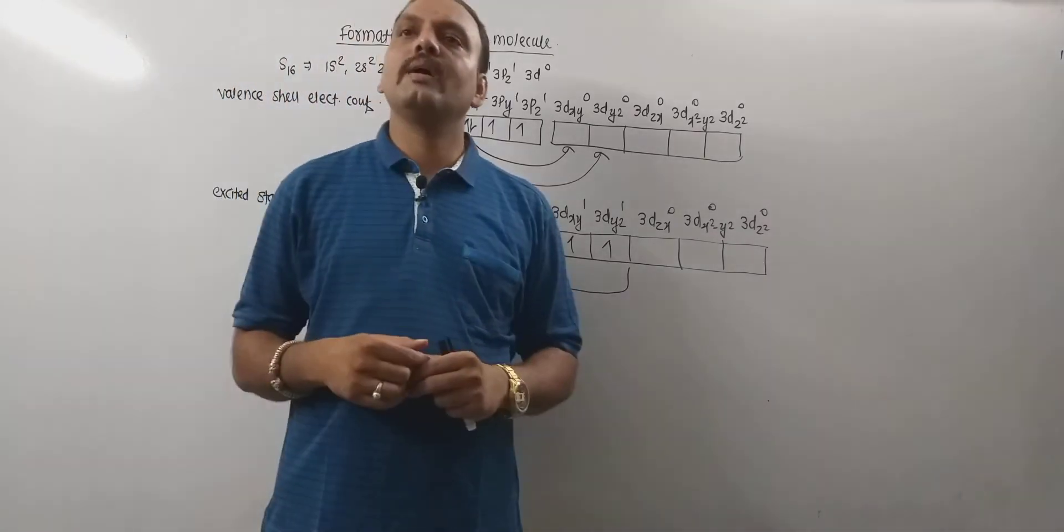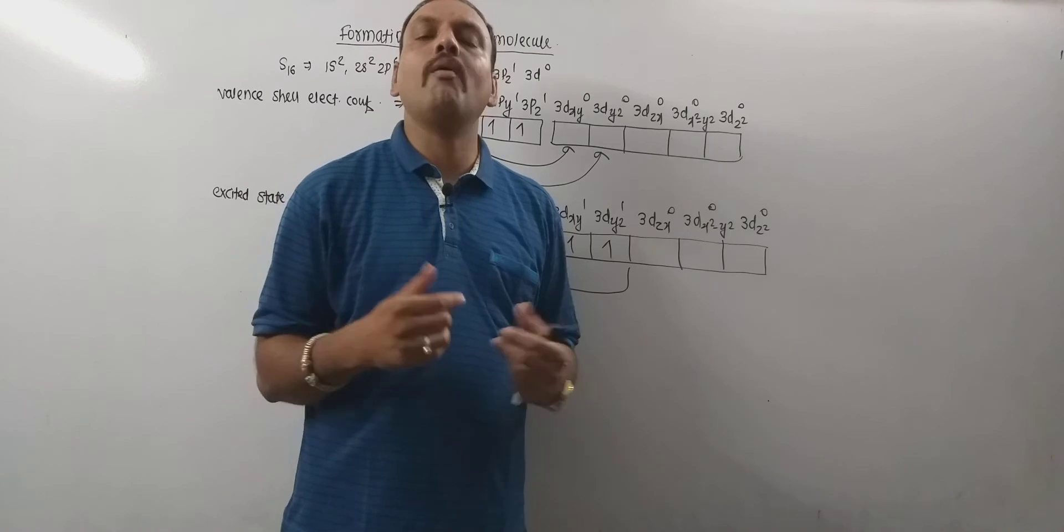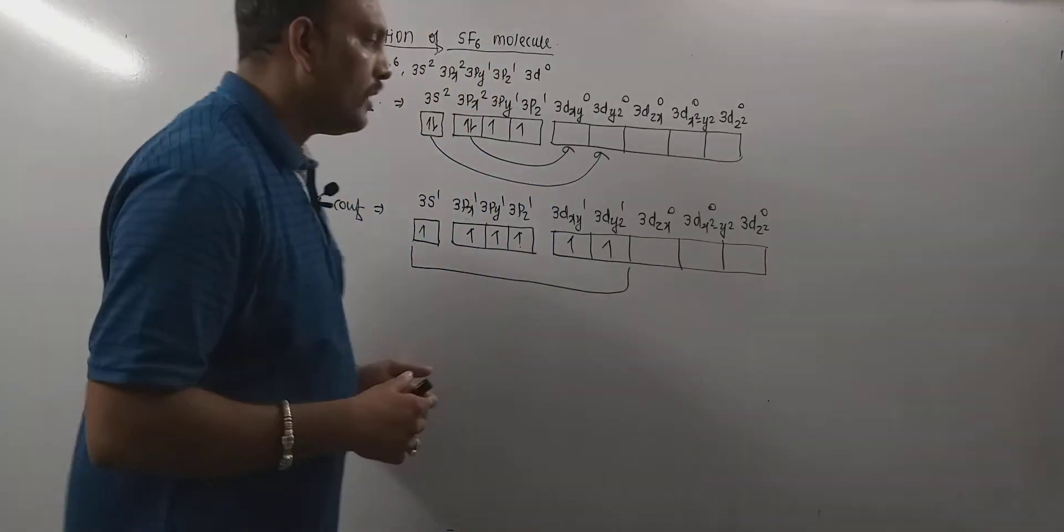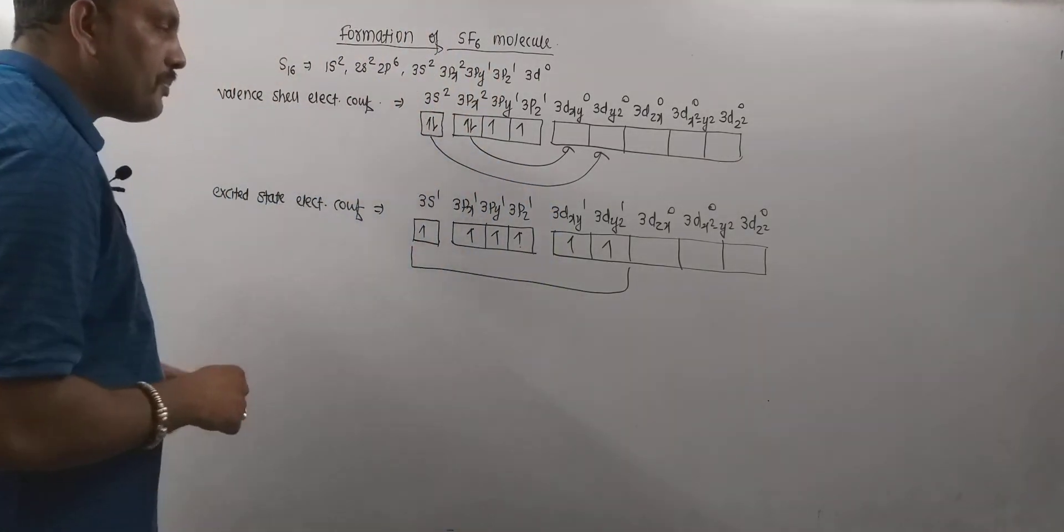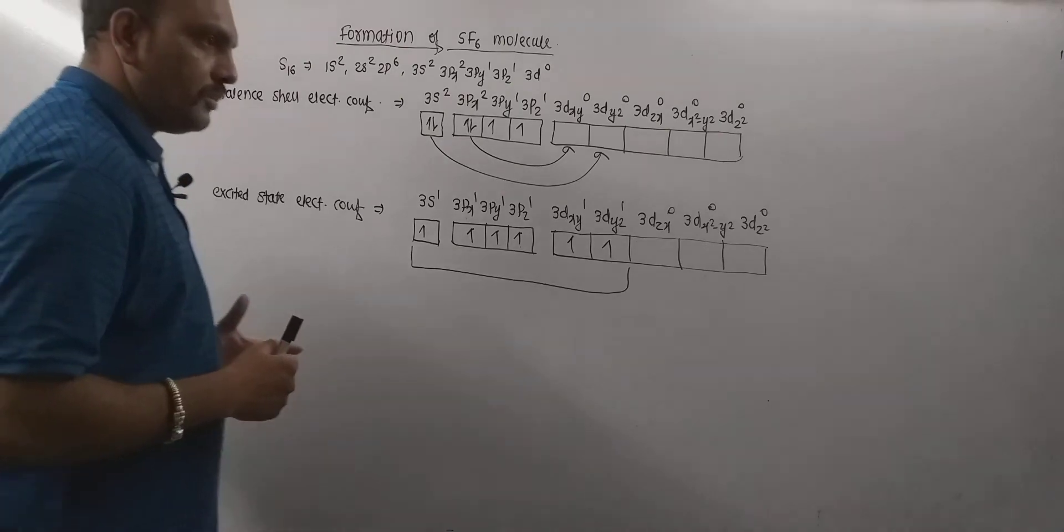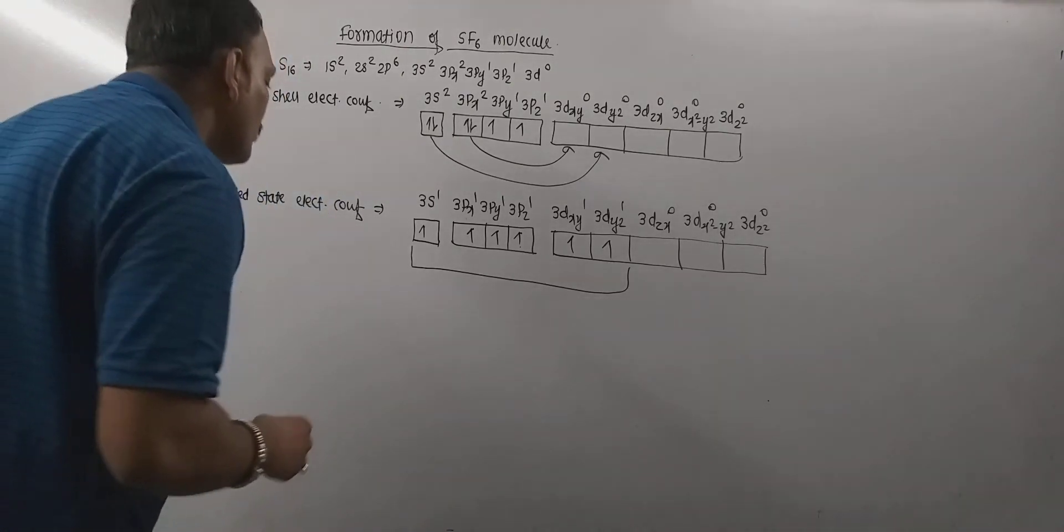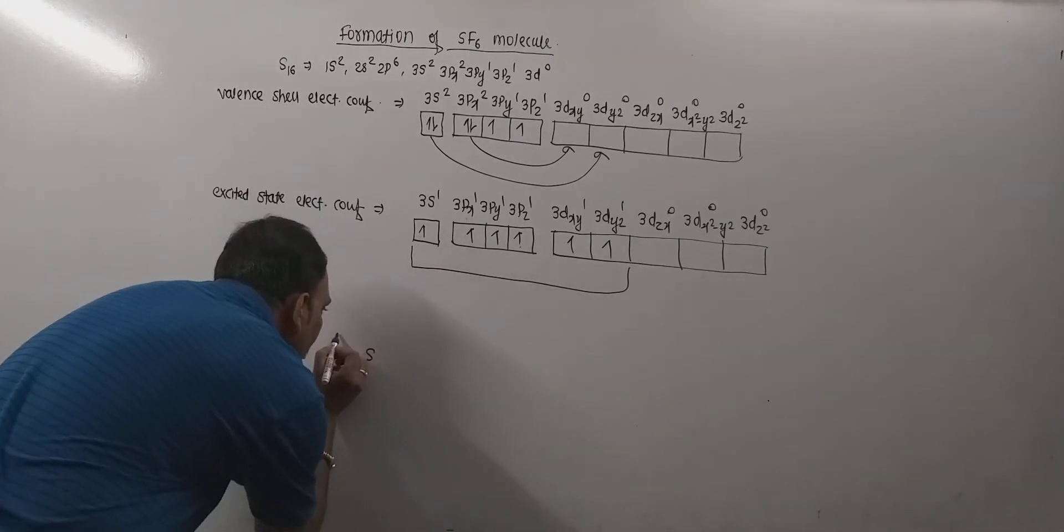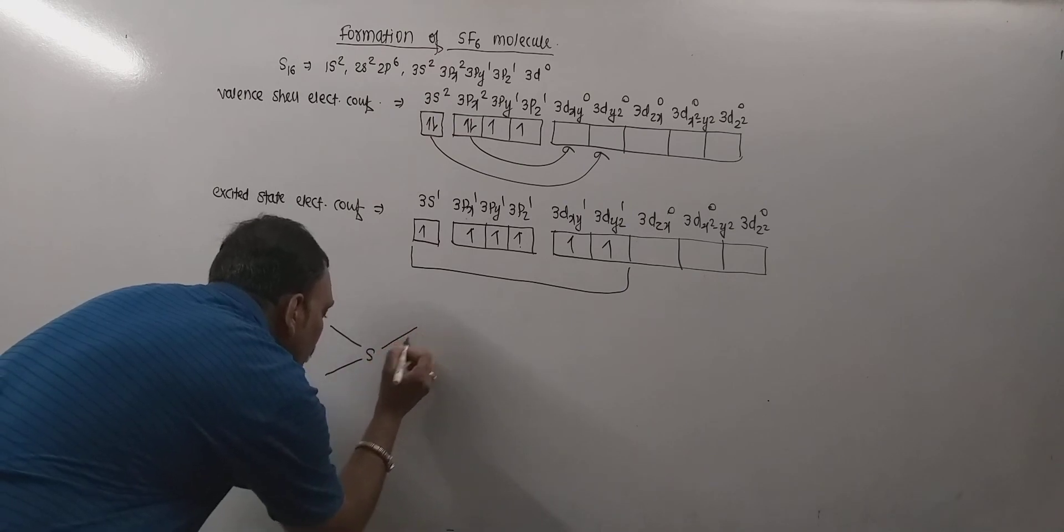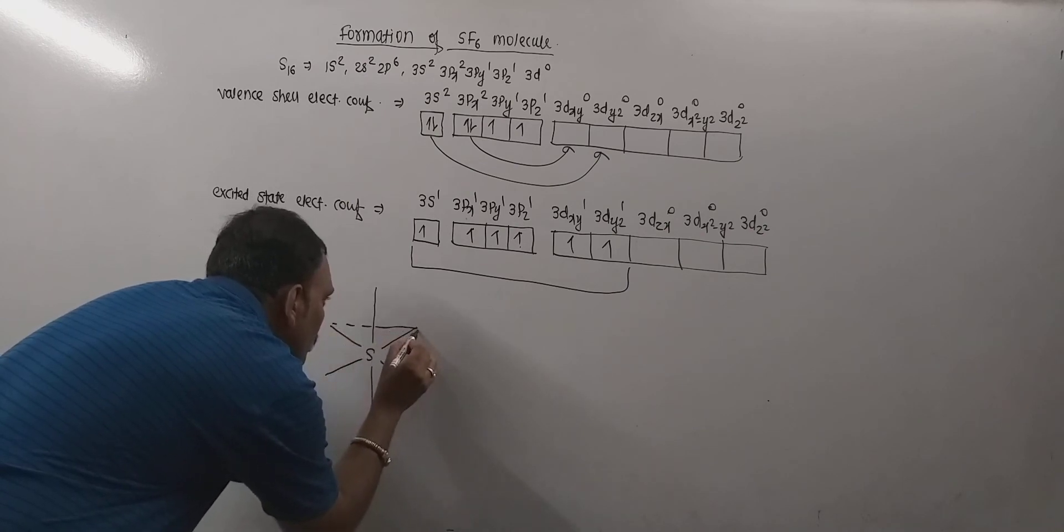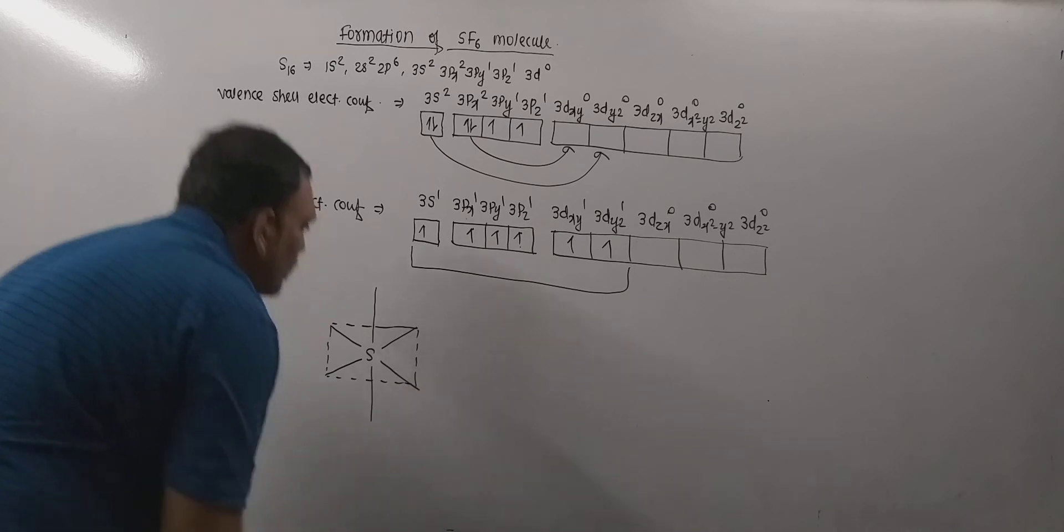Thus, the newly formed hybrid orbitals will have unpaired electrons also. So, what happens exactly? 6 SP3D2 hybrid orbitals are formed in the process of hybridization and these 6 hybrid orbitals are arranged in octahedral manner like this. So, arranged octahedrally around the central atom sulfur like this.